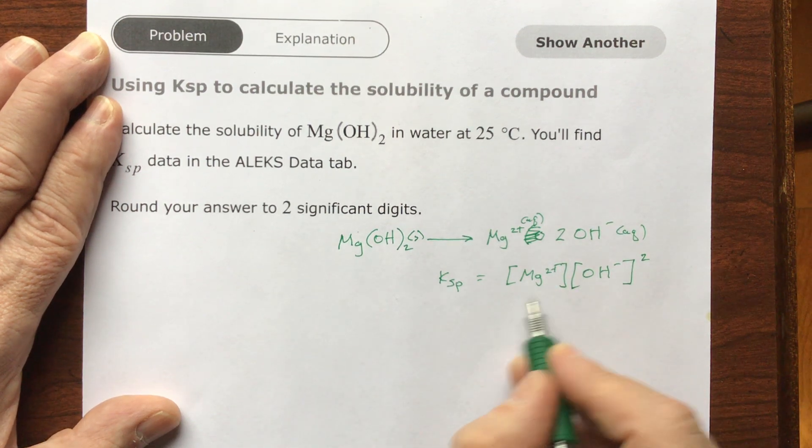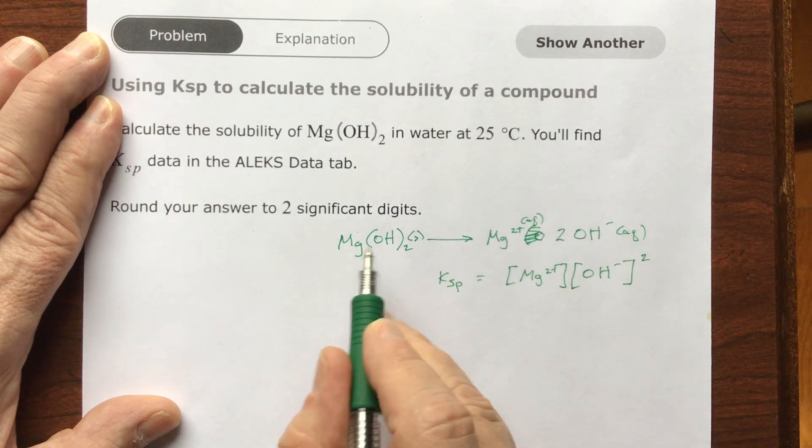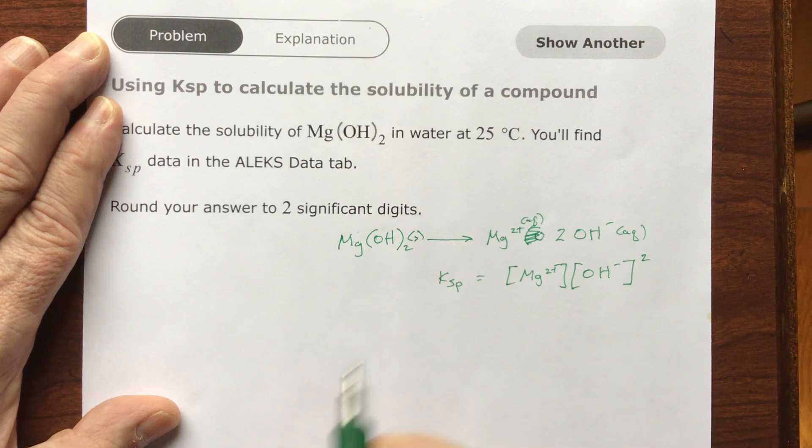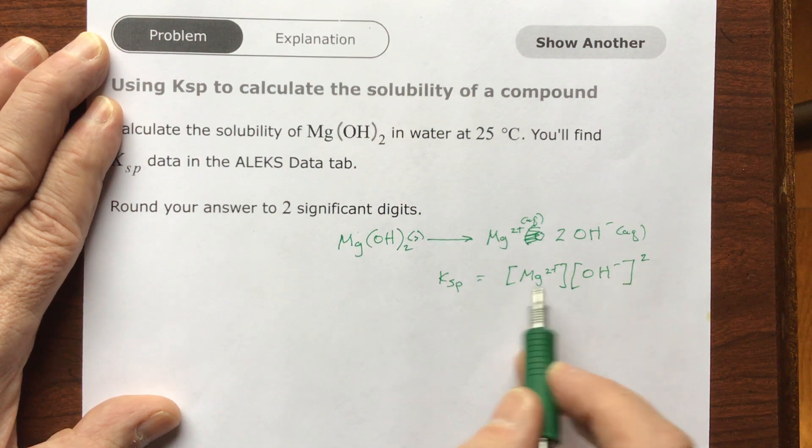And then this is multiplied times the hydroxide concentration raised to the second power because of that. Now, normally we would have a divided by a line, and then this would be in the bottom of this equation. But this is a solid, so we're going to ignore it. It's acting just like a constant. These are the only thing that's actually in solution. So this is the entire Ksp.